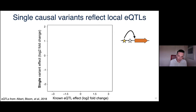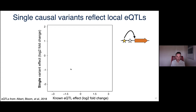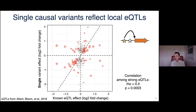We were then curious whether these variants identified in a synthetic assay on a plasmid could account for the diagonal of local eQTLs we started with. We compared the effect of these single variants to the effects measured in our earlier study and found a significant positive correlation — noisy, but significant — suggesting that our plasmid-based assay does recapitulate and explain some of these effects.